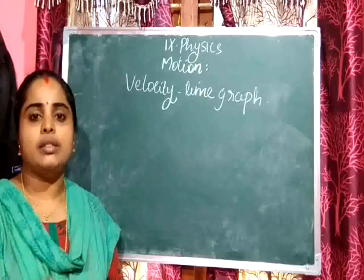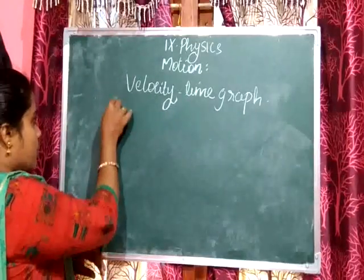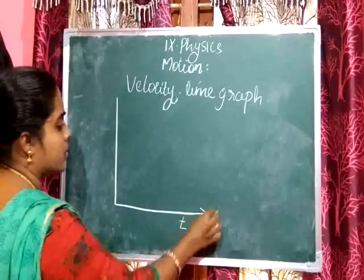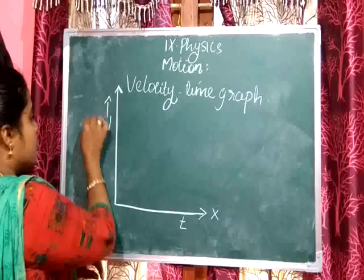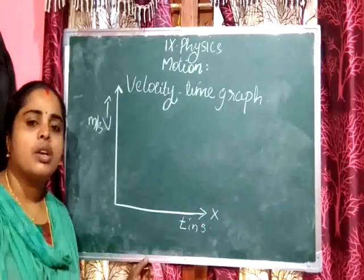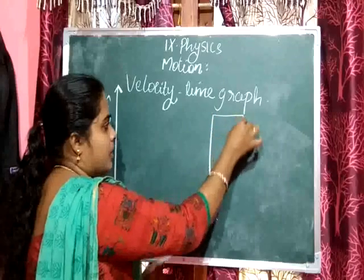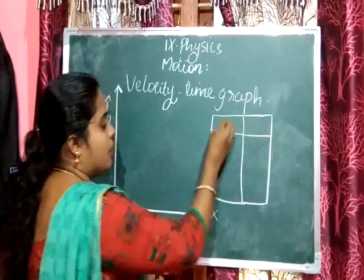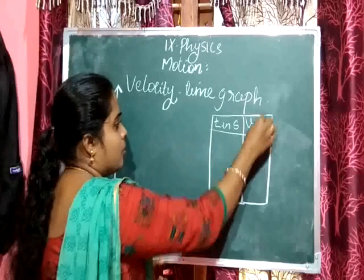In the distance-time graph, you know that distance is along the y-axis and time is along the x-axis. Here also, in the velocity-time graph I am going to plot, time is along the x-axis and velocity is along the y-axis. Velocity is in meter per second and time is in second. To plot a graph, we have to take an example.